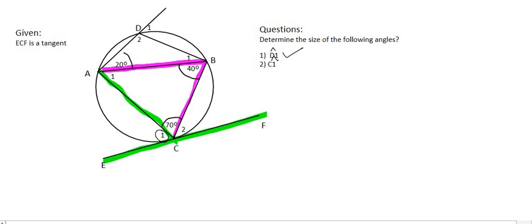So chord AC forms angle B. And so the tan chord theorem tells us that C1 would then be equal to 40 degrees, and the reason would be the tan chord theorem. And remember, if that doesn't make sense to you, then there are videos on the tan chord theorem.